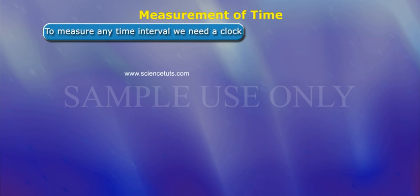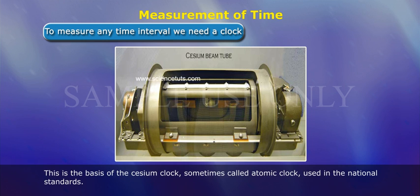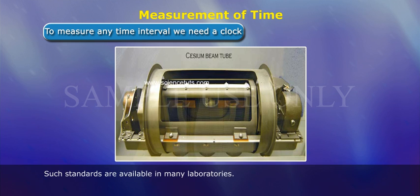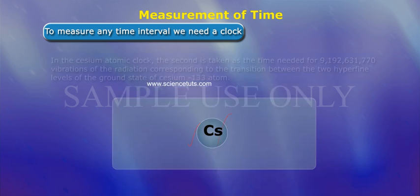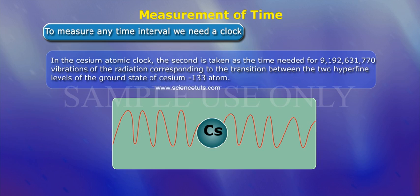To measure any time interval, we need a clock. We now use an atomic standard of time, which is based on the periodic vibrations produced in a caesium atom. This is the basis of the caesium clock, sometimes called atomic clock, used in national standards. In the caesium atomic clock, the second is taken as the time needed for 9,192,631,770 vibrations of the radiation corresponding to the transition between the two hyperfine levels of the ground state of caesium.